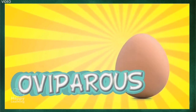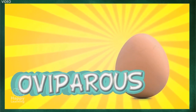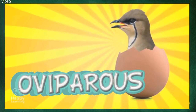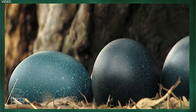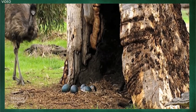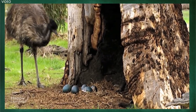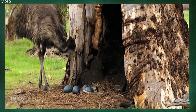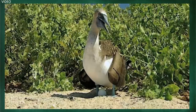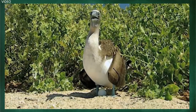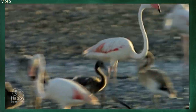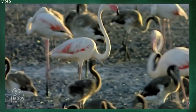Birds are oviparous, which means they reproduce by laying eggs. The females lay the eggs in nests, in the rocks, or on the ground, and with the heat of their bodies they incubate the eggs until the little chicks hatch.